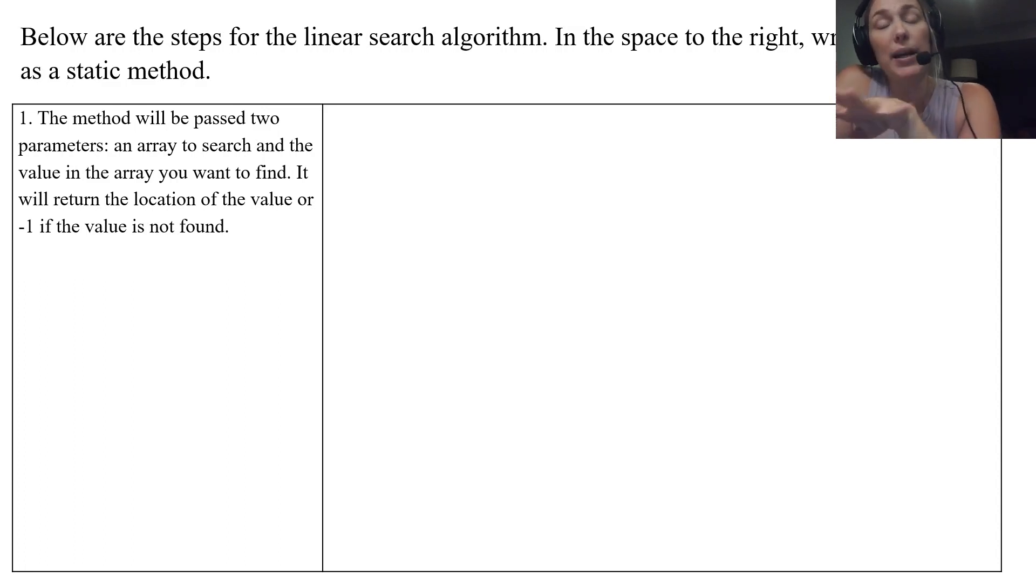So taking that into account, our method for this is going to be static. It's going to return an int. It's going to return the location, the index of whatever it's looking for. I'm going to call it linear search, and we're going to use a string, an array of strings. This can be modified, we'll see here in a little bit, for an array of integers, array of booleans, whatever it may be. We're going to use an array of strings and we're going to try to find a specific word in this array called word.